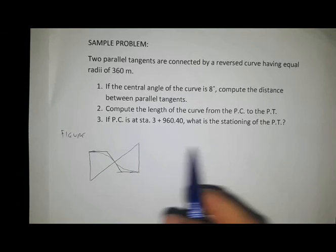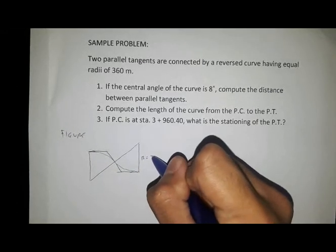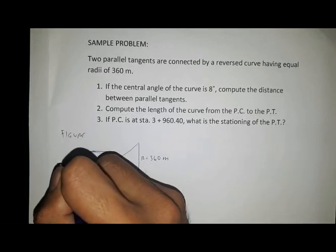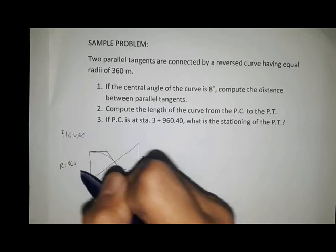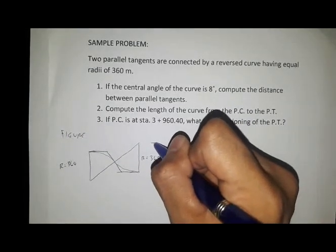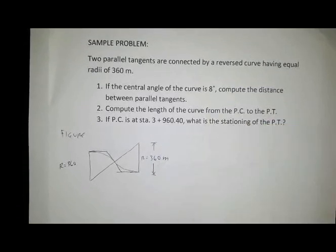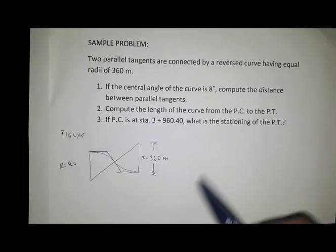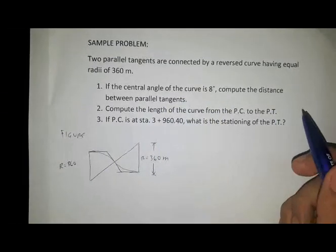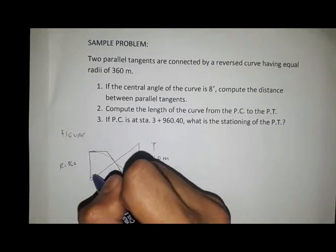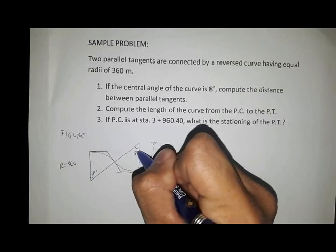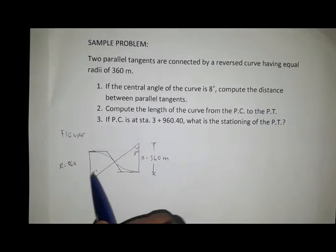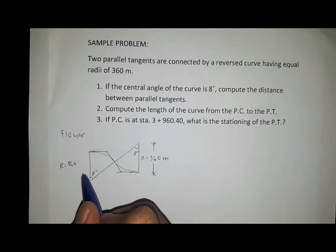The radius of the curve and the reverse curve have equal radii of 360 meters. The central angle of the curve is 8 degrees, and the distance between parallel tangents is the perpendicular distance between those two parallel lines.